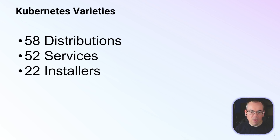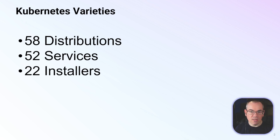At the moment there are a large number — over 100 — of these distribution services or installers. We've got 22 installers, which are things that install vanilla Kubernetes. There are 52 services — managed services where you essentially get access to an installed, managed version of Kubernetes — and then 58 distributions, which are things that you can install on-premises or in a cloud but manage yourself.